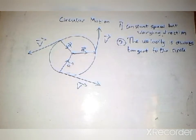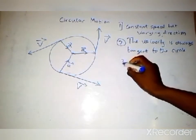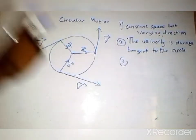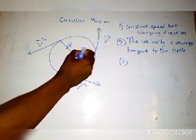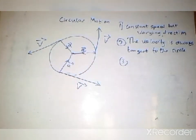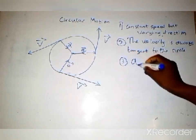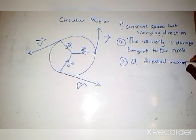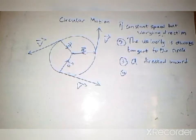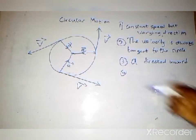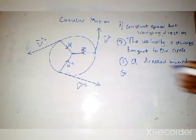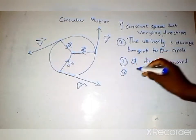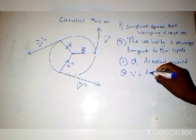The velocity is always tangent to the circle. Another thing is that the acceleration is directed inward — toward the center of the circle. Also, the particle travels the circumference of the circle.